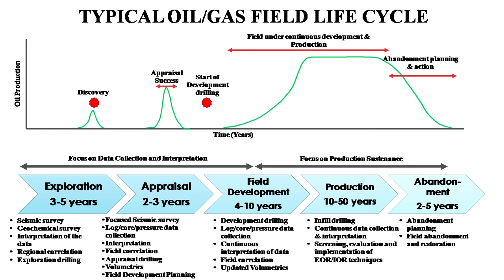Production reaches its peak and stays there — what we call the plateau production level. Towards the end of the field's life, as we have used all our technology to produce as much as possible, the field goes into natural decline as the oil and gas from the reservoir get exhausted, and the oil rate slowly goes down. After that we come to the end of the life cycle — this represents a typical life cycle of an oil and gas field.